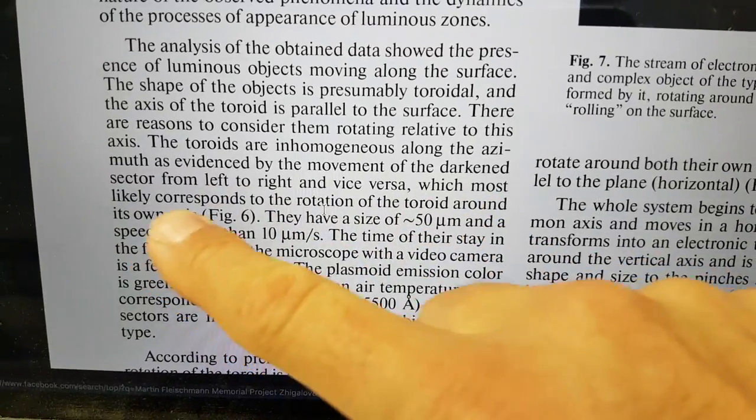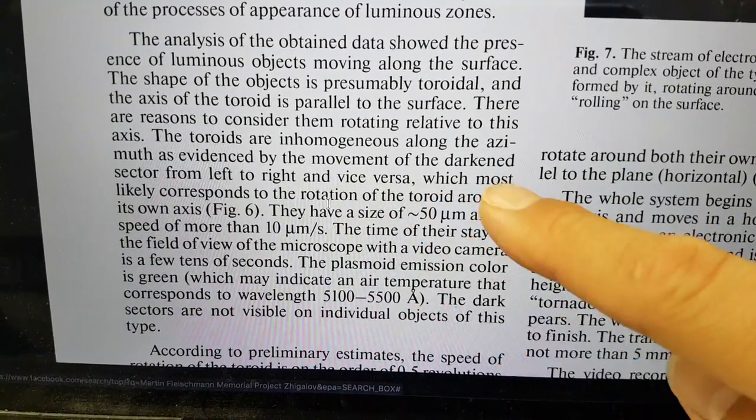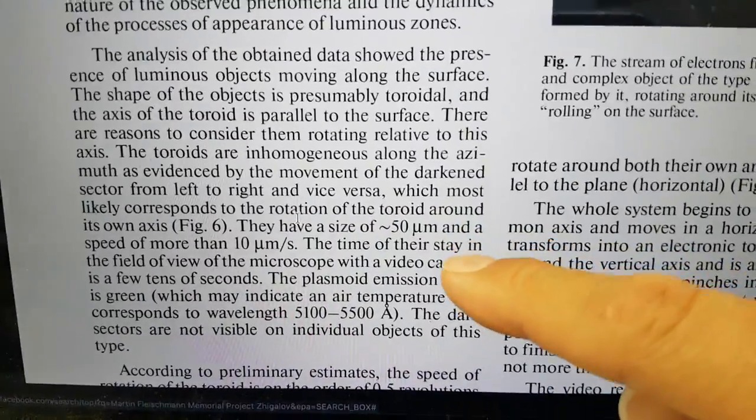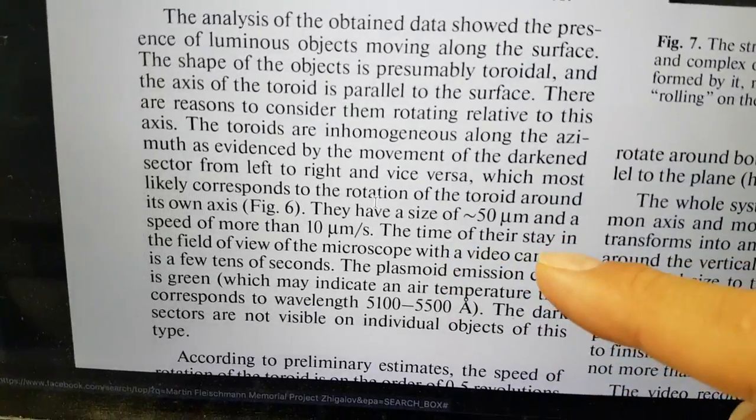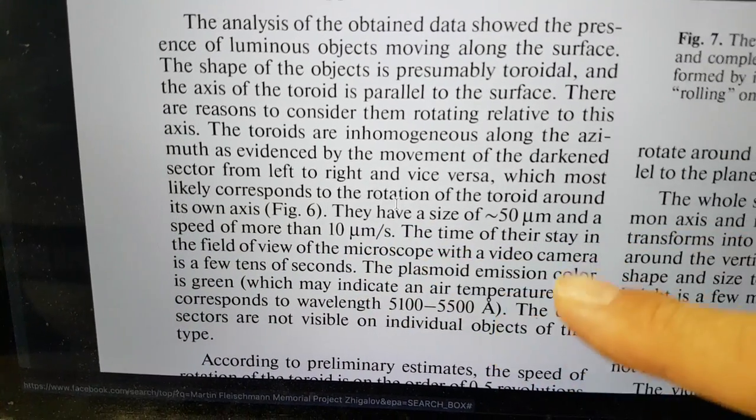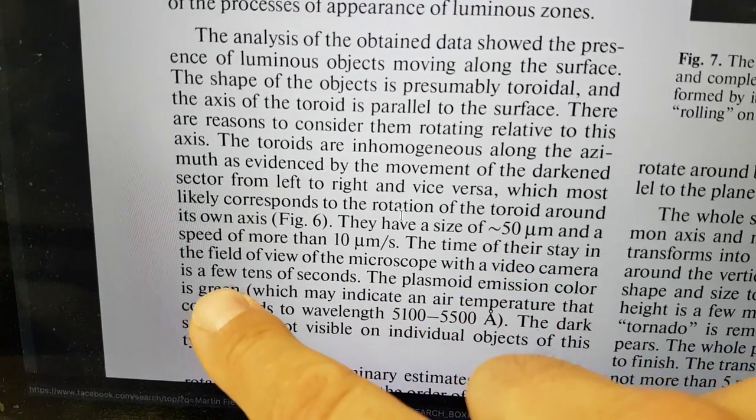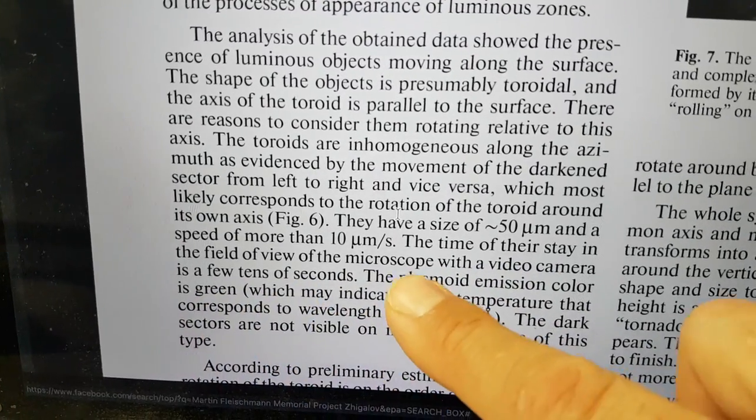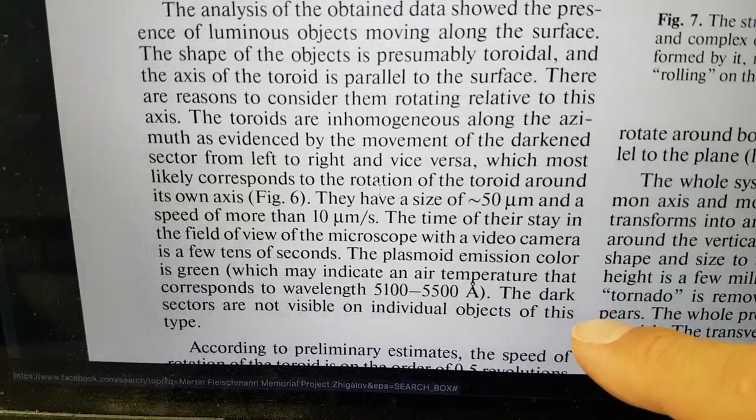There are reasons to consider them rotating relative to the axis. The toroids are inhomogeneous along the azimuth, as evidenced by the movement of the darkened sector from left to right and vice versa, which most likely corresponds to the rotation of the toroid around its own axis. This is under a microscope. It's the luminous object under the microscope. The suggestion is it's moving in this direction, you've got dark area and so on. This is a luminous toroidal object that performs translational and rotational motion over the surface of the electrode. They have a size of 50 micrometers. This is the same kind of quanta that we've observed and that Matsumoto observed. 50 microns is one of the quanta. The plasmoid emission color is green.